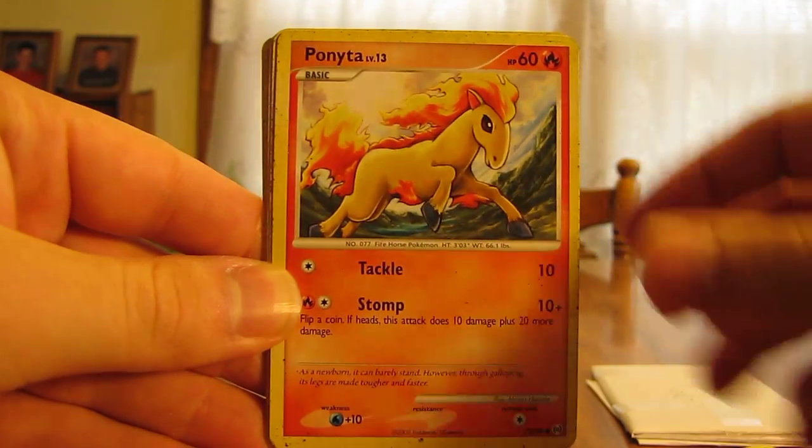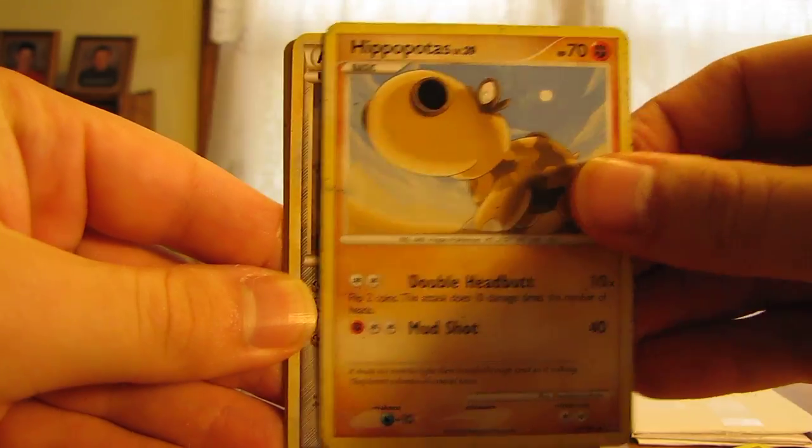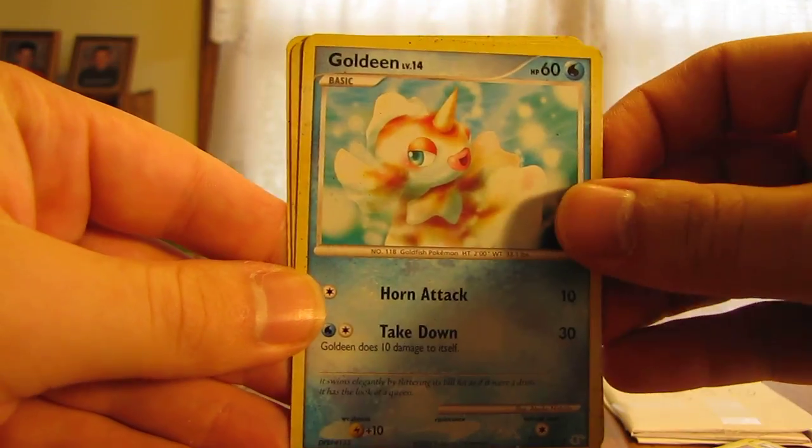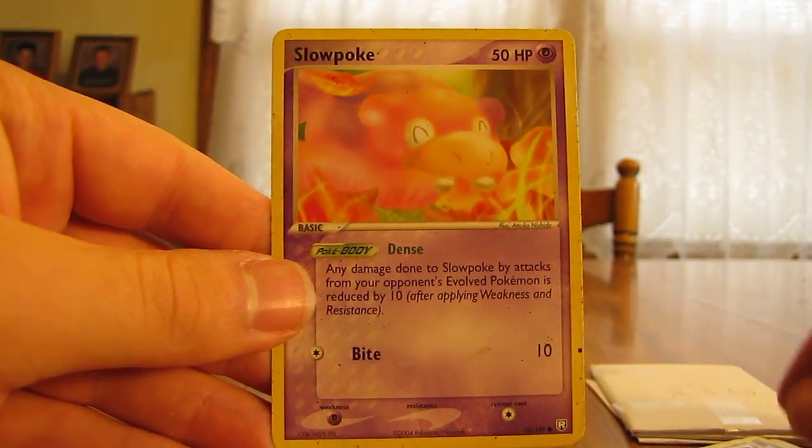Ponyta, Hippopotas, Aeron, Scorpi, Goldeen, Copycat, and Slowpoke.